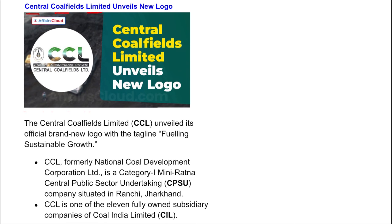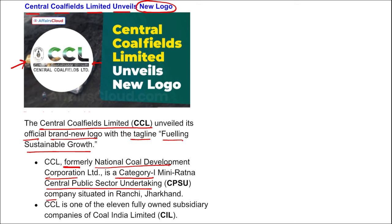Next: Central Coalfields Limited (CCL) unveiled a new logo with the tagline 'Fueling Sustainable Growth'. CCL, formerly the National Coal Development Corporation Limited, is a Category One Mini Ratna CPSU situated in Ranchi, Jharkhand. CCL is one of the 11 fully owned subsidiaries of Coal India Limited — others include Bharat Coking Coal Limited, Eastern Coalfields Limited, Western Coalfields Limited, South Eastern Coalfields Limited, Northern Coalfields Limited, Mahanadi Coalfields Limited, and Central Mine Planning and Design Institute. CCL produced 86.1 million tons of coal in FY24.